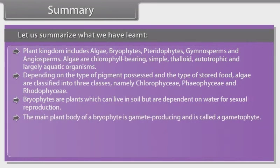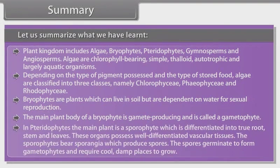The main plant body of a bryophyte is gamete-producing and is called gametophyte. In pteridophytes, the main plant is sporophyte which is differentiated into true root, stem, and leaves. These organs possess well-differentiated vascular tissues. The sporophytes bear sporangia which produce spores. The spores germinate to form gametophytes and require cool, damp places to grow.